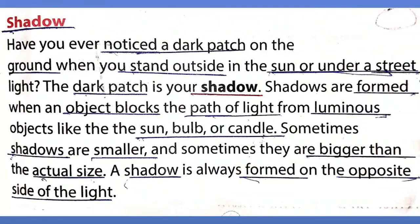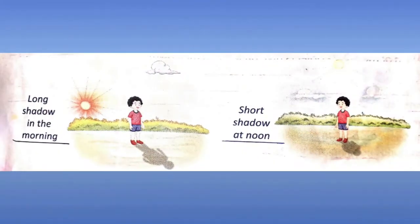Now, shadow. Have you ever noticed a dark patch on the ground? When you stand outside in the sun or under a street light, the dark patch is your shadow. Shadows are formed when an object blocks the path of light from luminous objects like the sun, bulb or candles. Sometimes shadows are smaller and sometimes they are bigger than the actual size. A shadow is always formed on the opposite side of the light. Shadow kaise banta hai? Jab bhi aapke opposite side se light aati hai, to aapka shadow banta hai.